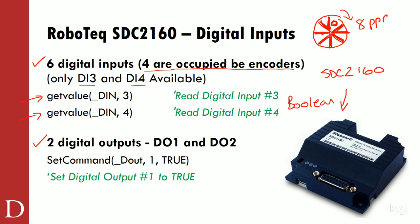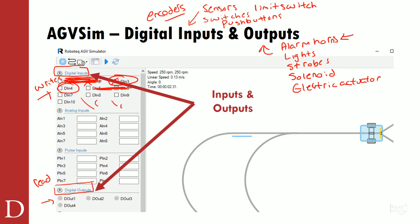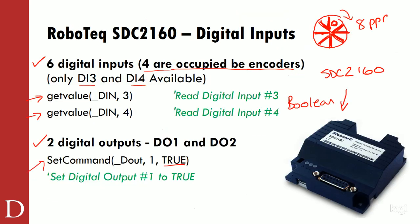I also have two digital outputs available. If I want to turn on one of those digital outputs, I use the command 'set command_dout1' — digital output one — set it to true or false, or 'dout2' set to true or false. I'll receive indication when it's set to true by a little light turning on, so I'll actually be able to see it turn on or off.